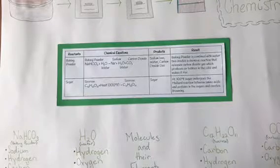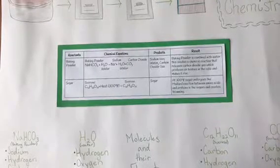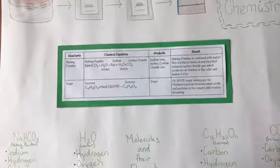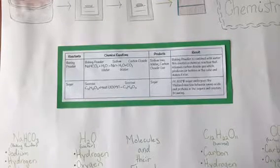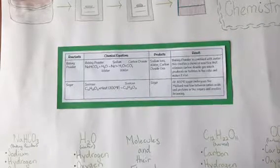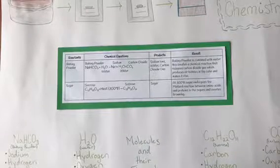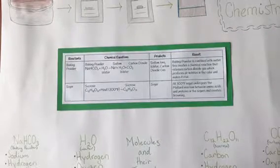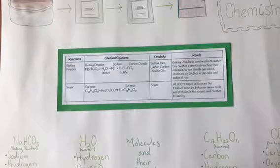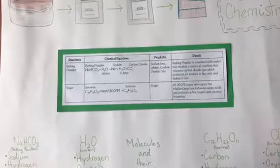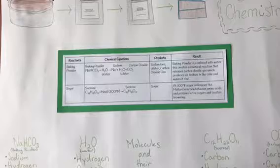The next one is sugar. Sugar's chemical equation is sucrose, when mixed with heat, turns into sucrose. The product of this is just sugar, which is the same thing as it originally was, but it does brown, making it a chemical reaction. At 350 degrees Fahrenheit, sugar undergoes the Maillard reaction between amino acids and proteins in the sugar and creates browning.